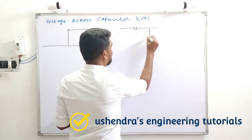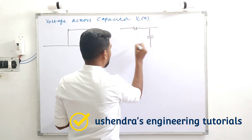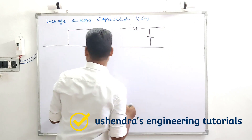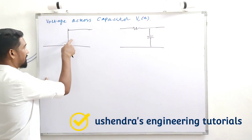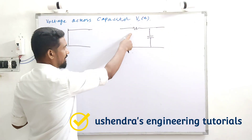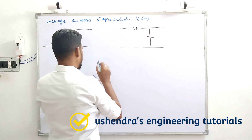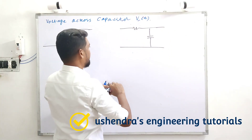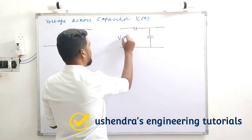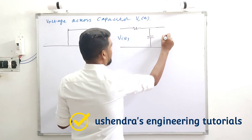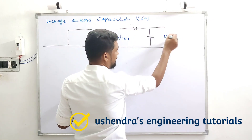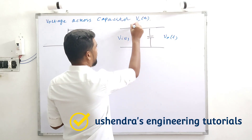Let me give that justification. So, step function as input to RC network. We have Vi and voltage across capacitor will be the output voltage.